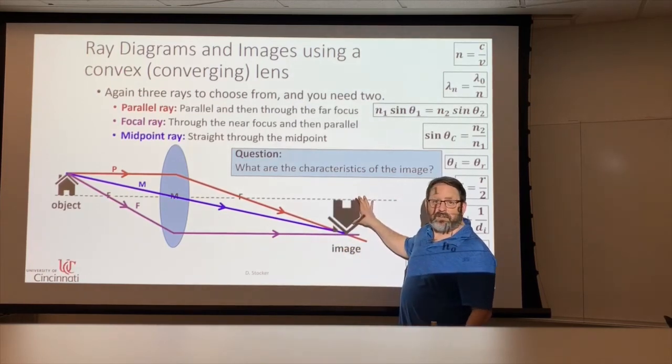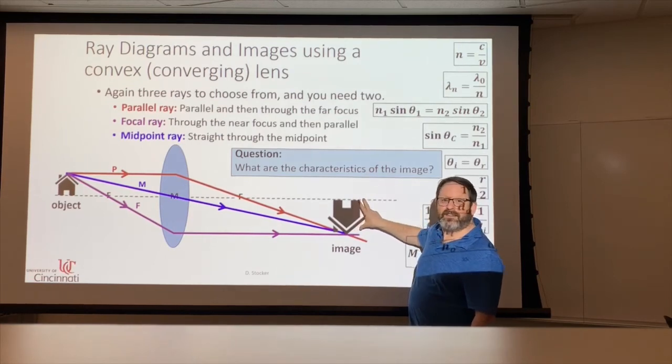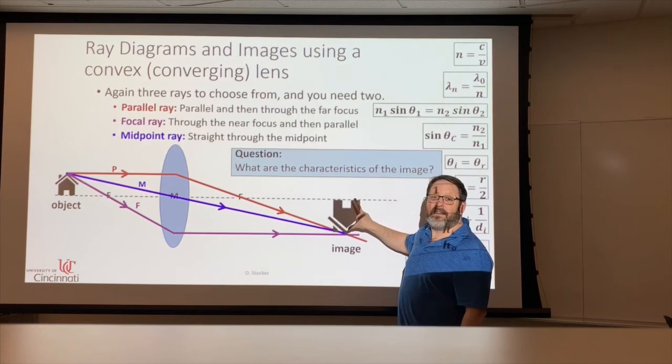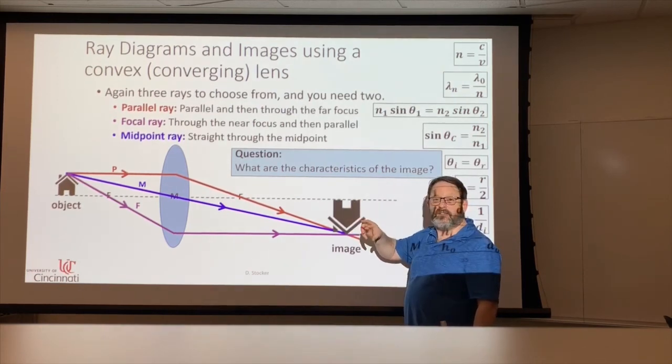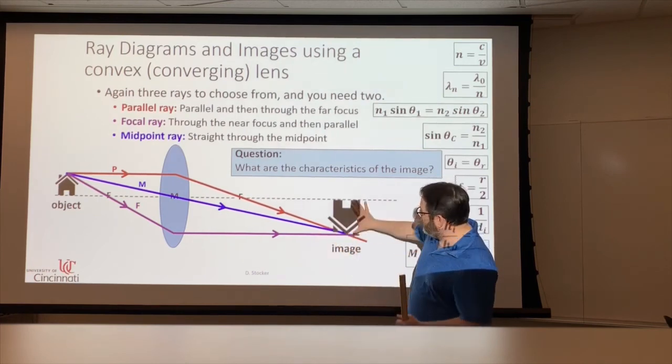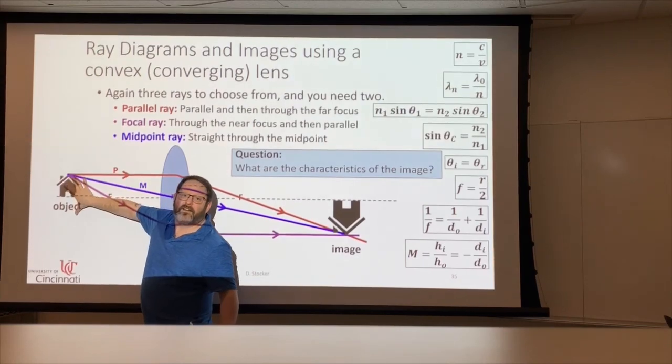And is it inverted or upright? Well, obviously this house is inverted. So this one's inverted. It's real. And then the other thing, magnification. Is it enlarged, reduced or true? And in this case, that looks to me like it's enlarged.